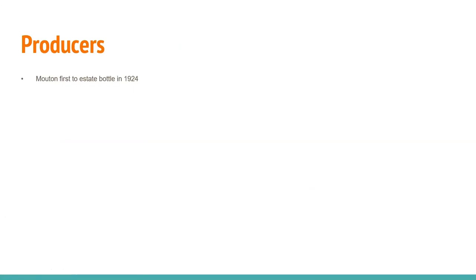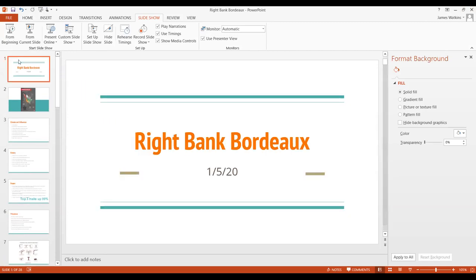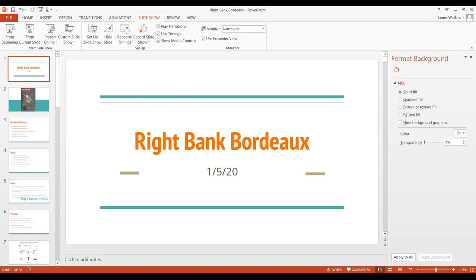Mouton was the first to estate-bottle in 1924 — important to note in the history of Bordeaux over the last 100 years and the rise of these wines. Is Bordeaux still approachable? Are people still drinking it? Are they fearful of the price, or of it being old and stodgy? We'll see where it leads as we creep up on the 100-year anniversary of Mouton being the first to estate-bottle. That's my show for today — I hope everybody enjoys a little Bordeaux this week. There will be no webinar next week as I'll be in San Sebastián in northern Spain. Cheers, see you in a couple weeks.